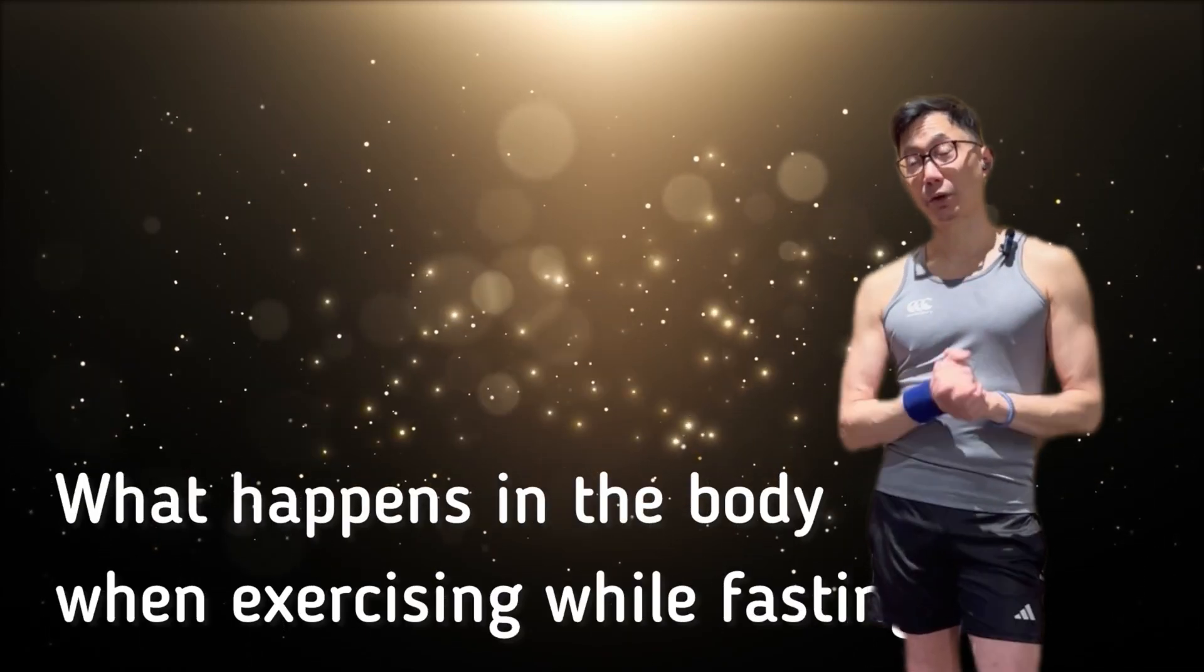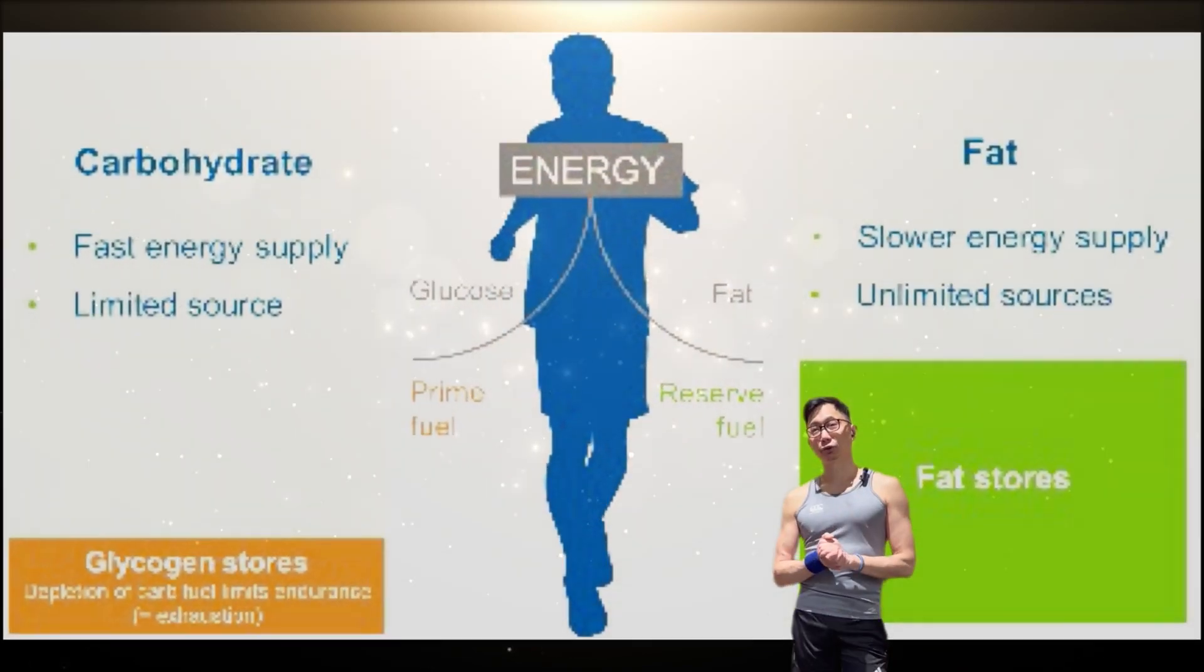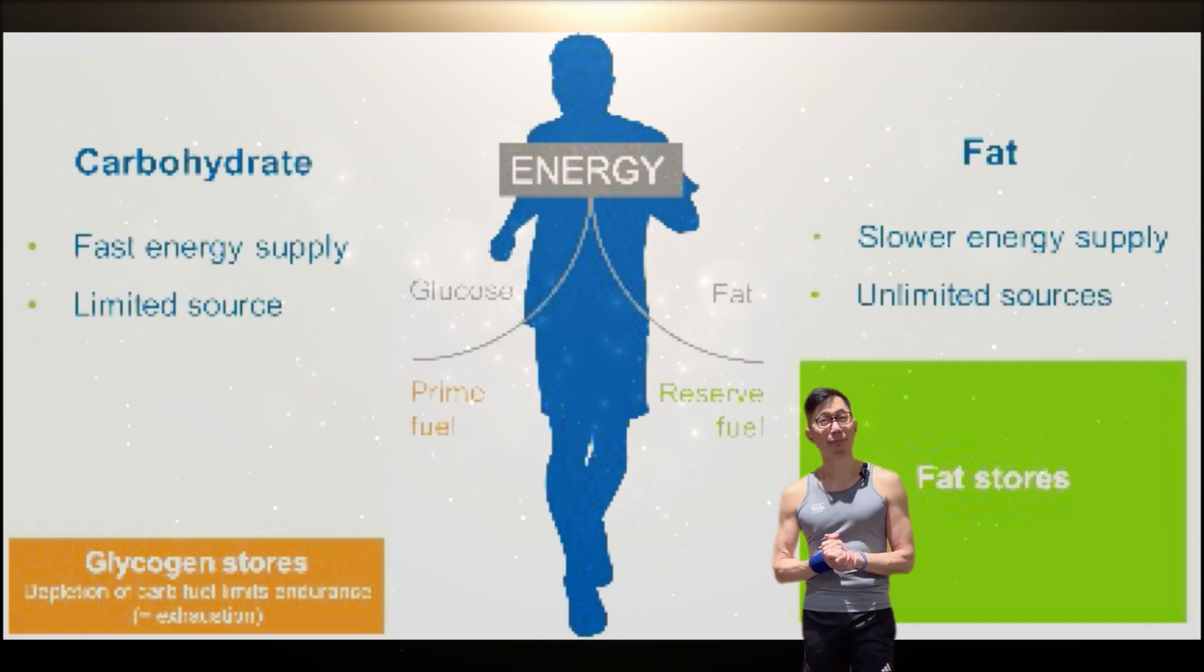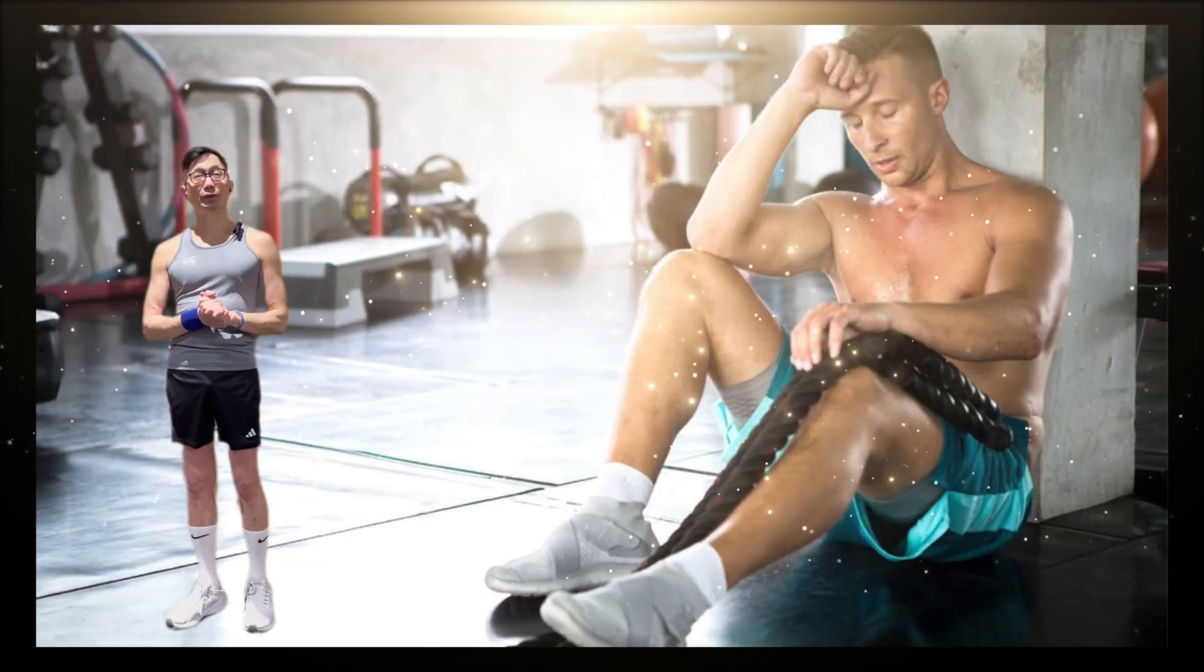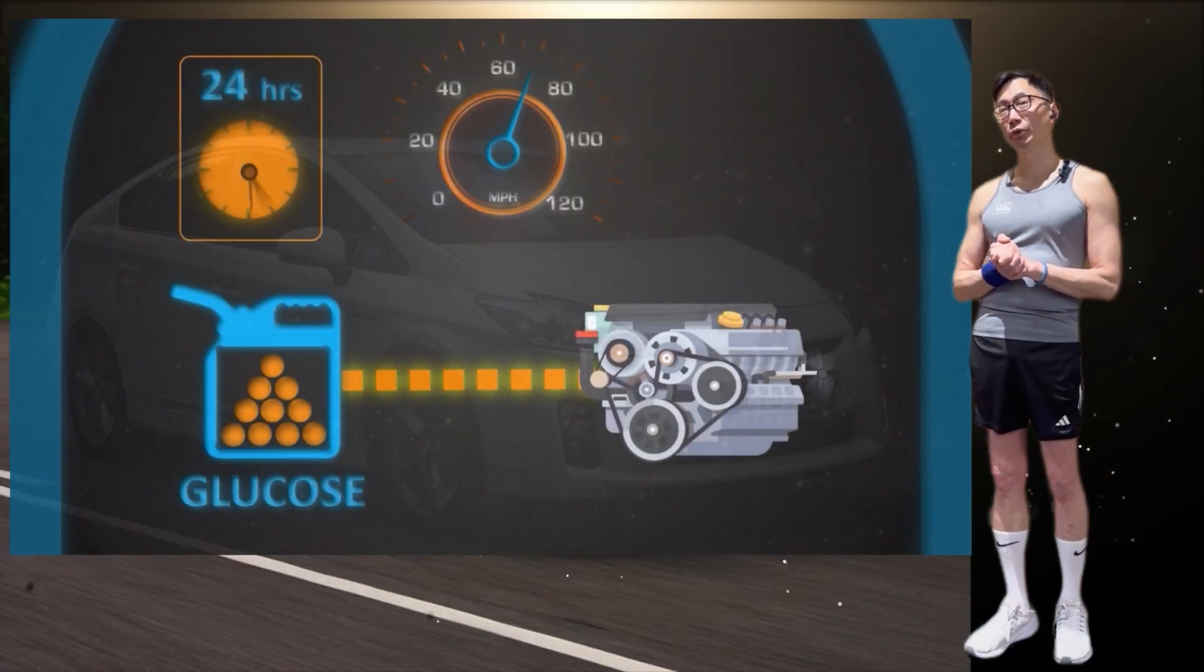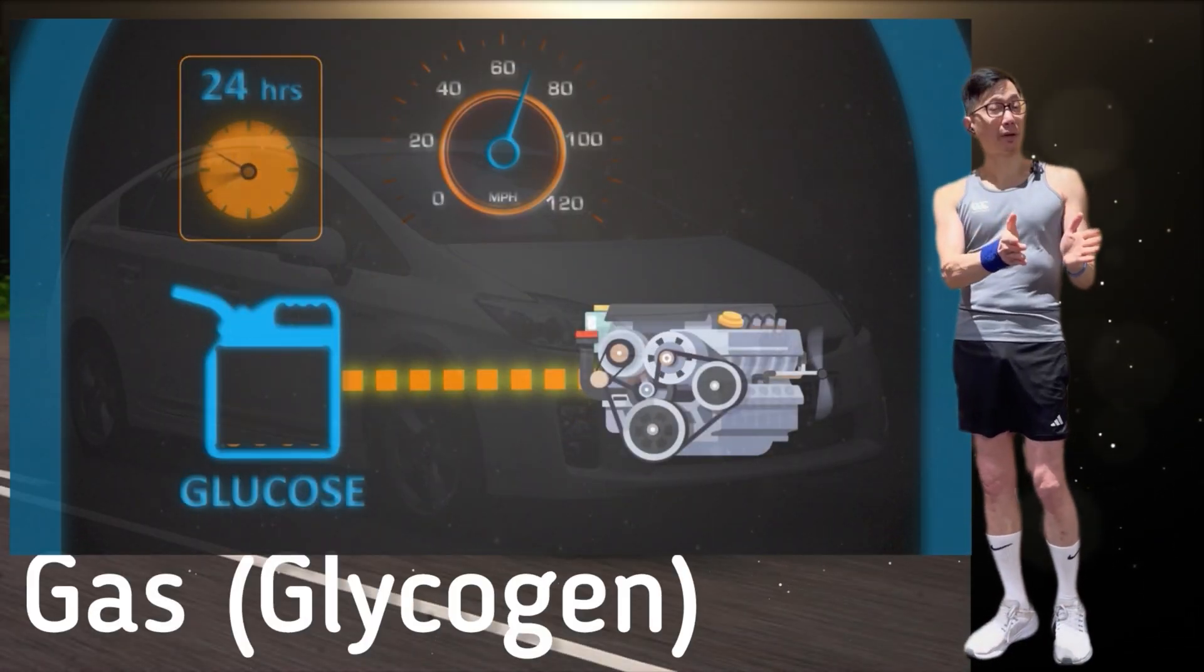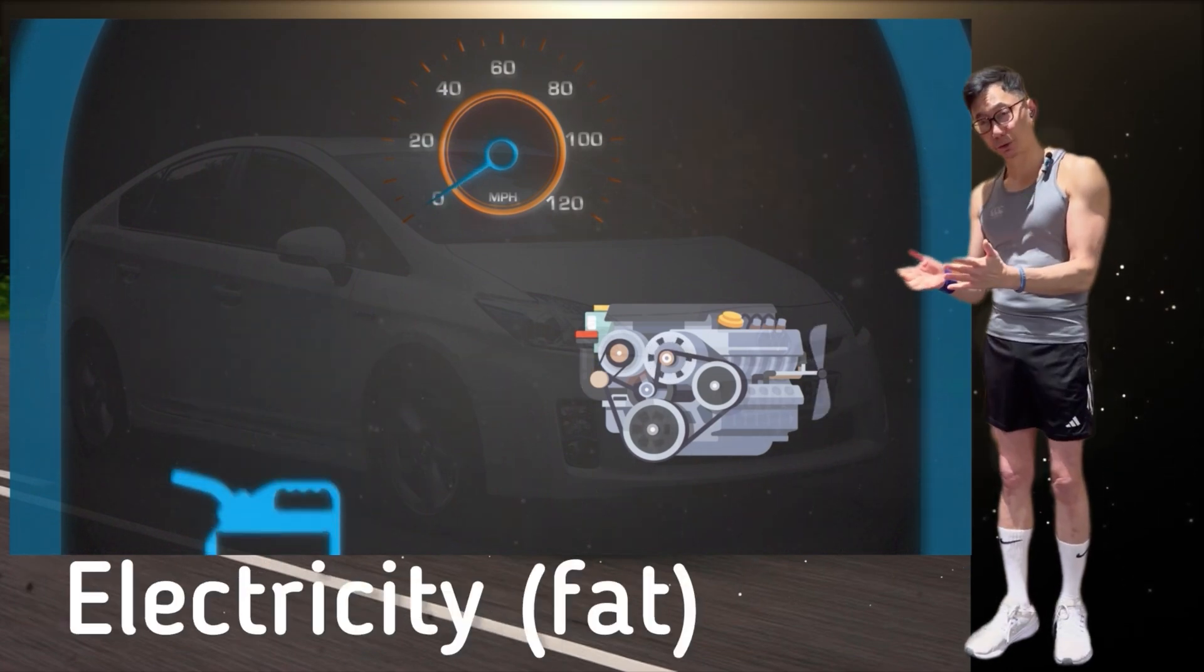Now the question is, what happens in your body when exercising while fasting? The body has limited energy supply, so it is purposeful in how and when it uses different types, especially when exercising in a fasted state. The best way to understand this is to think of your body as a hybrid car with two available fuel sources. One source is gas or glycogen, the stored form of glucose, and the other is electricity or fat.